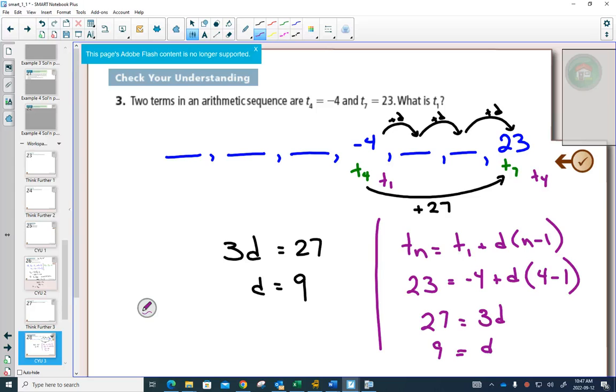Now, if you wanted to find term one. Method number one. Here's term one. If I want to find that, and I work backwards. Does it make sense? If you're working forwards, you add nine. If you work backwards, you would subtract nine. So doing that, we would get minus 13, then minus 22, then minus 31. And we found term one.